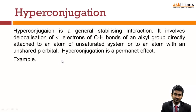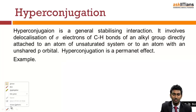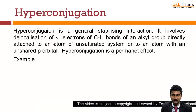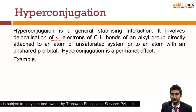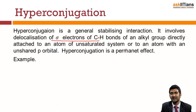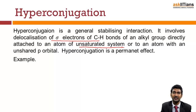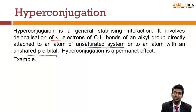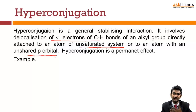Hyper conjugation is the general stabilization interaction. It involves the delocalization of the sigma bonds — specifically the C-H bond of any alkyl group, whether it is CH3, C2H5, C3H7 — any alkyl group directly attached to an atom of an unsaturation system, meaning a double bond, triple bond, or an atom with a vacant p orbital.